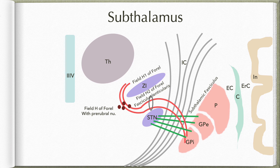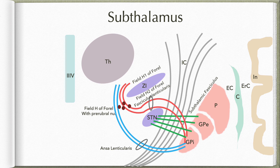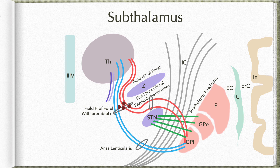The second bundle starting from the globus pallidus internum is the ansa lenticularis — 'ansa' meaning hook. These fibers hook around the ventral aspect of the internal capsule as it descends to form the crus cerebri in the midbrain. They then ascend to reach field H of Forel and further ascend to reach field H1 of Forel. At field H of Forel, the fasciculus lenticularis and ansa lenticularis fibers come together, and as they ascend through field H1 of Forel, they reach the ventral anterior and ventral lateral nuclei of the thalamus.